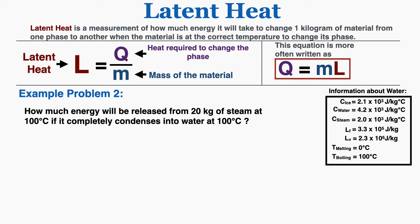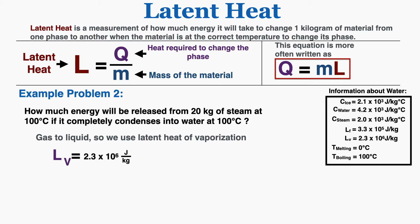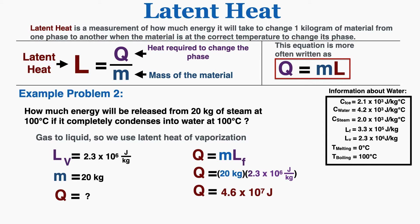Example problem 2: How much energy will be released from 20 kilograms of steam at 100 degrees Celsius if it completely condenses into water at 100 degrees Celsius? The temperature is at its boiling point, so we use the latent heat equation. Going from gas to liquid, we use the latent heat of vaporization: 2.3 times 10 to the sixth joules per kilogram. With a mass of 20 kilograms, Q equals mL gives 4.6 times 10 to the seventh joules — the energy that must be removed from the steam.